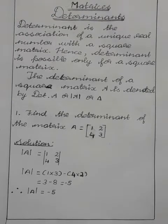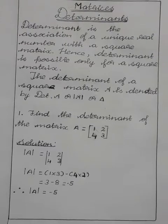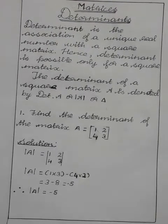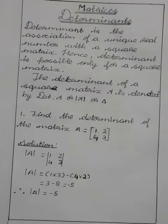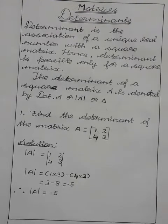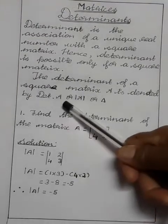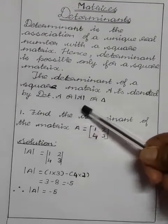Determinant is the association of a unique real number with a square matrix. Hence, determinant is possible only for a square matrix. The determinant of a square matrix A is denoted by determinant of A matrix or delta.